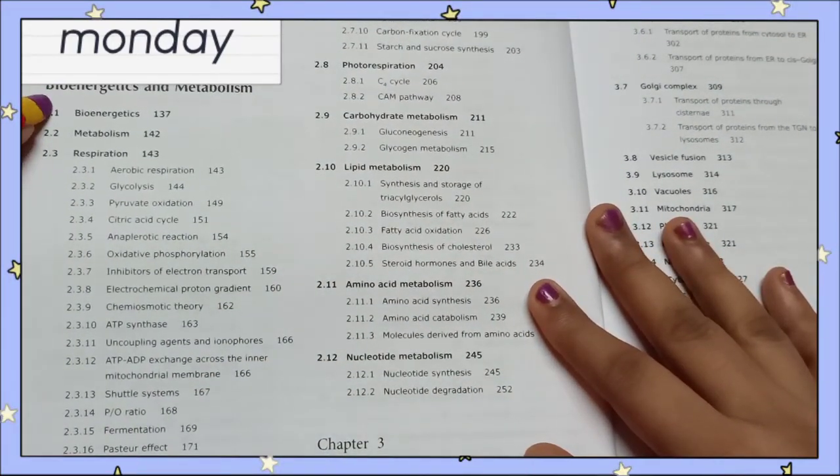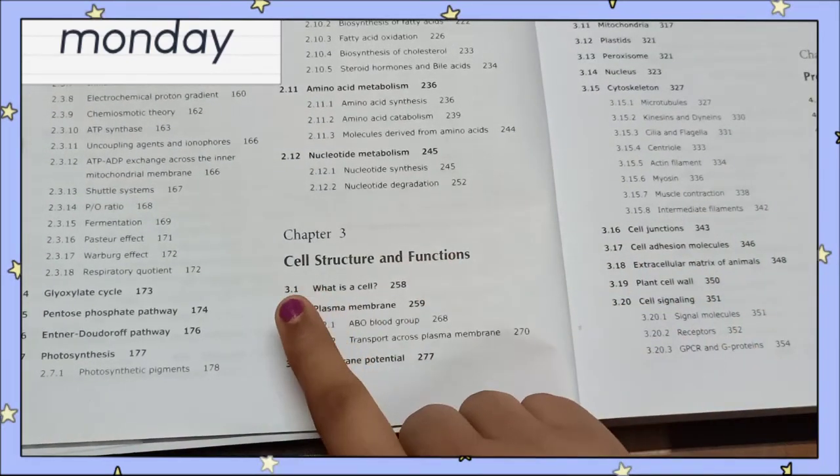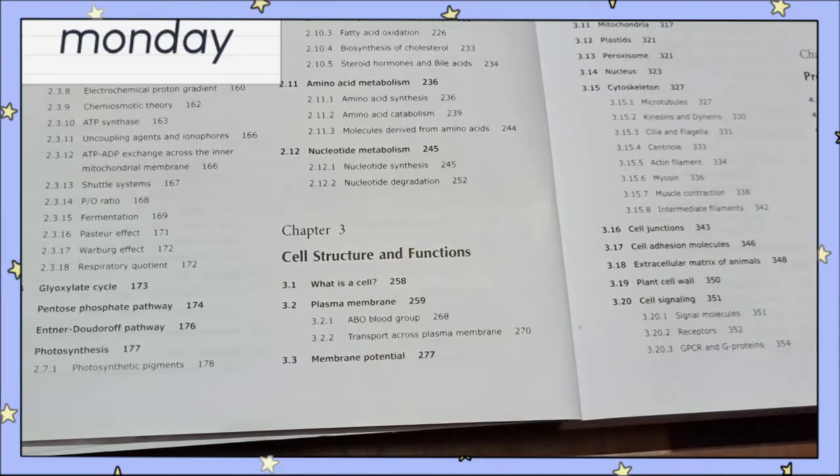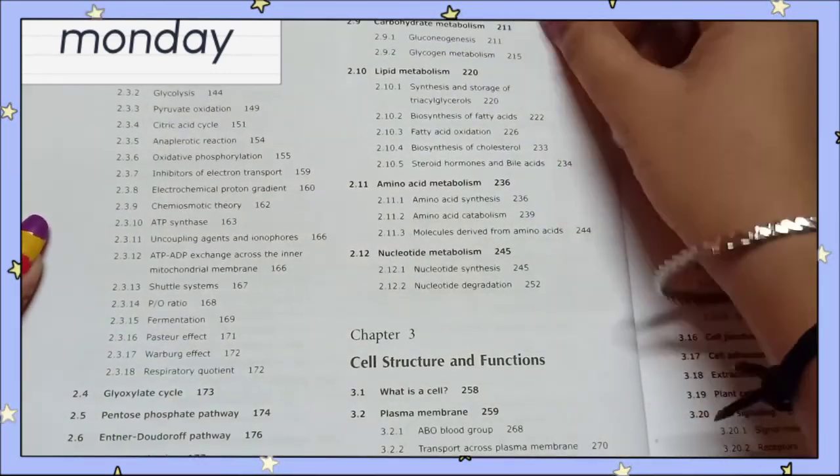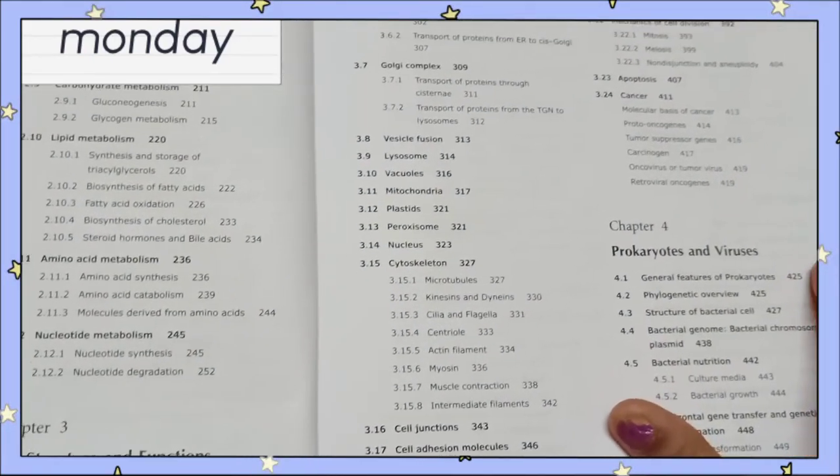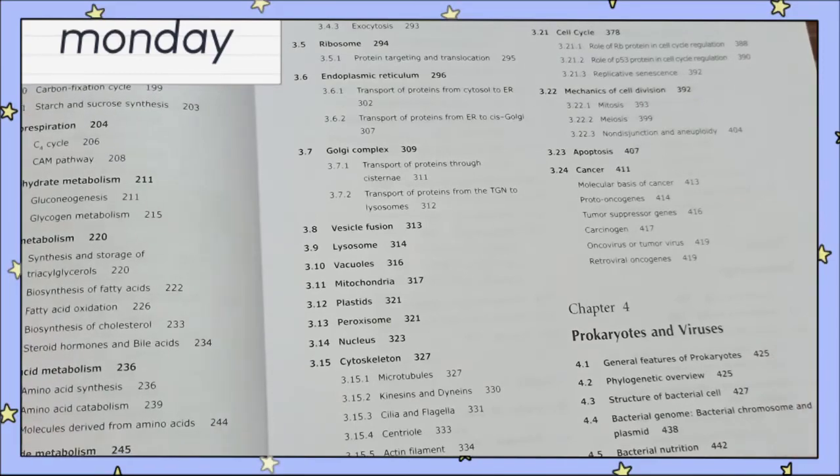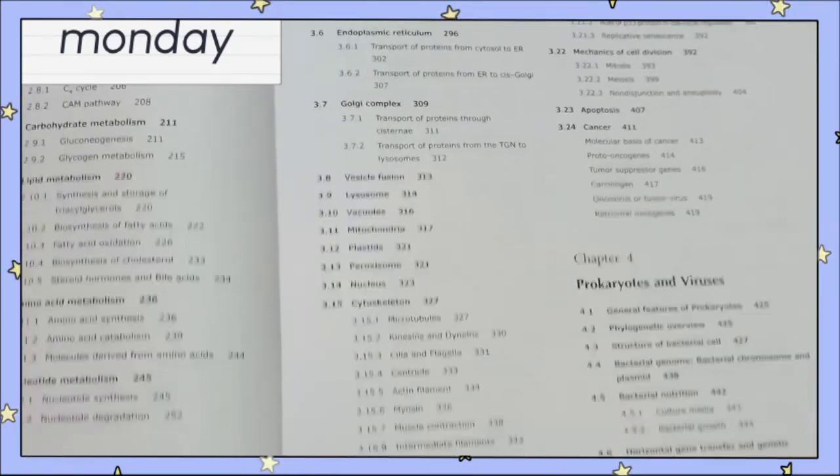Chapter 2nd is of Bioenergetics and Metabolism. Chapter 3rd is of Cell Structure and Functions. You can see all the smallest topics in this book. And if you have this book then you don't need to worry about how to crack your CSIR NET exam because